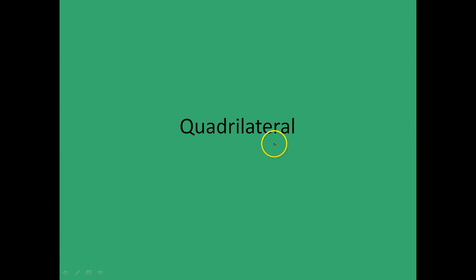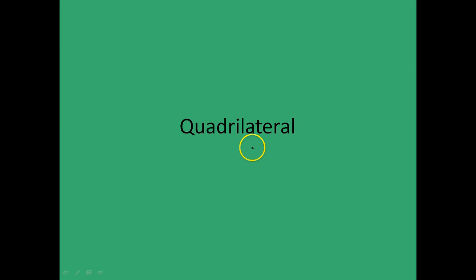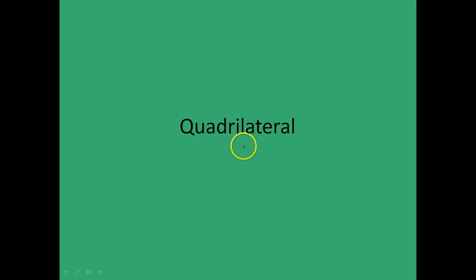Hi, this is a lecture on quadrilaterals. Recall that a quadrilateral is a geometrical figure which is formed when four non-collinear points are joined to form a closed figure.